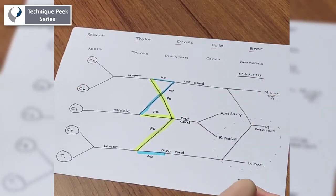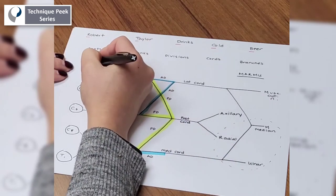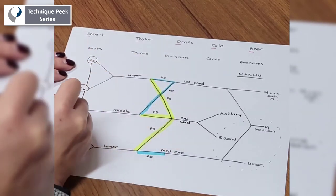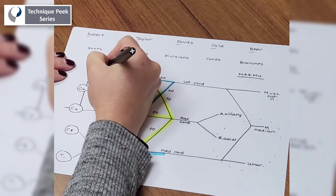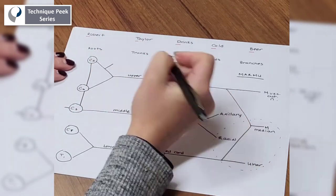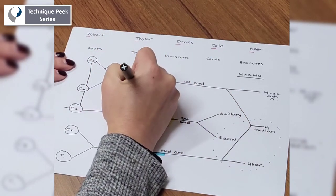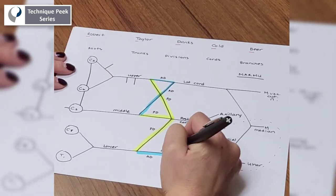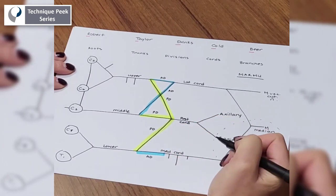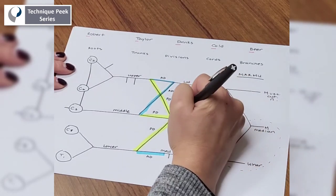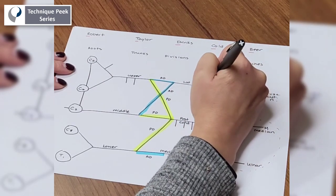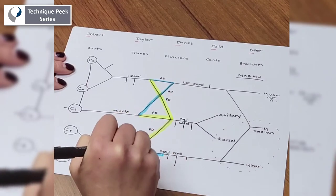Now, we have a few more details of branches to add in. So we're going to start back over here by C5. We're going to join together C5, C6, and C7 and make a little offshoot here. We're going to add a little offshoot there. We're going to put two little branches under the upper trunk. We're going to put three branches below the medial cord. We're going to put three below the posterior cord. We're going to put one above the lateral cord. And now we have to label them.